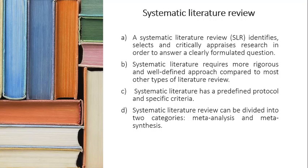The systematic literature review is opposite to the narrative literature review. It follows pre-identified criteria, scope, and a specific protocol, and it identifies, selects, and critically appraises research in order to answer a clearly formulated question. It is more rigorous and well-defined compared to the narrative review. The systematic literature review can be divided into two major categories: meta-analysis and meta-synthesis.